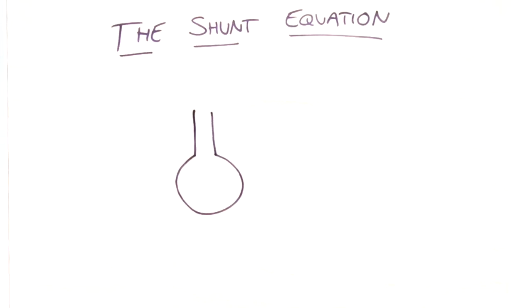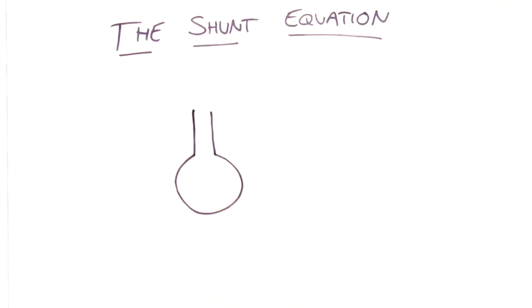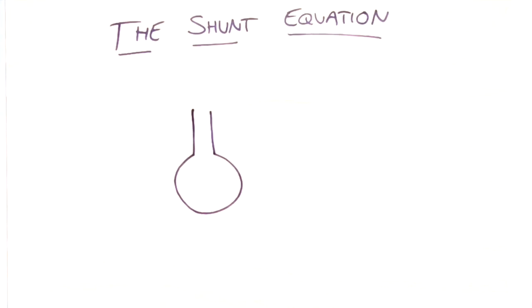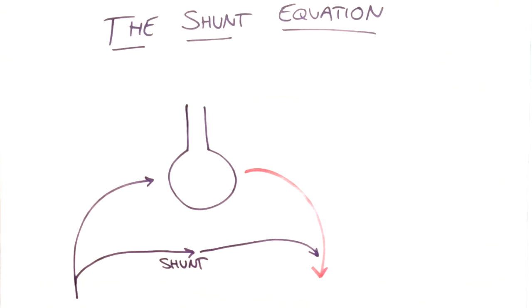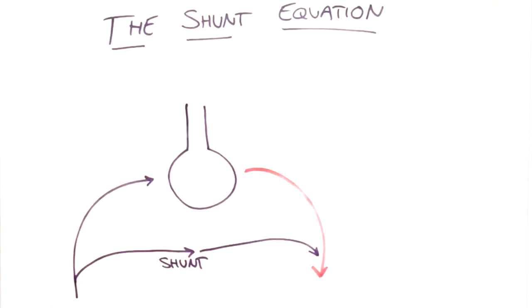Here we have an alveolus. In an ideal world all of the blood coming out of the heart would go through the alveoli and then return nicely oxygenated back to the left side of the heart. But in reality a proportion of the blood is shunted through the lung and doesn't pick up any oxygen. Obviously the more blood is shunted, the less oxygen you're going to pick up and the less effective your cardiorespiratory system is going to be.